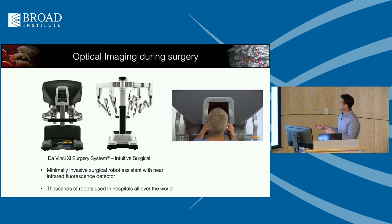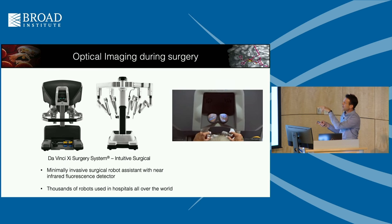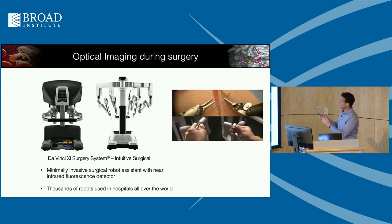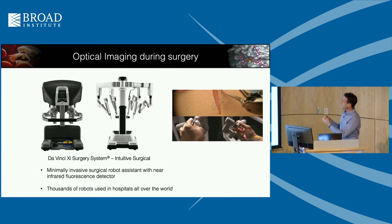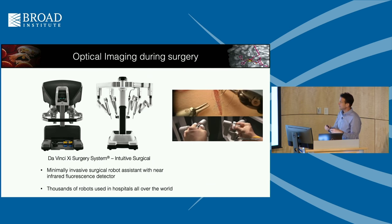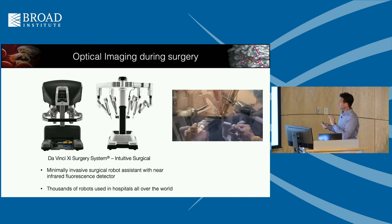The surgeon sits in the same room or next room over — hardwired to the robot. They look into an eyepiece giving a 3D image via a camera inside the patient, and move the robot arms by making the same movements themselves. It's very simple to learn because you get a very large field of view and can control it precisely. It's very good for fine procedures.